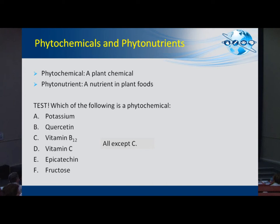A phytochemical is very simply a plant chemical — any chemical in fruits and vegetables is a phytochemical. A phytonutrient is a nutrient in plant food, so the emphasis is obviously on 'nutrient.'